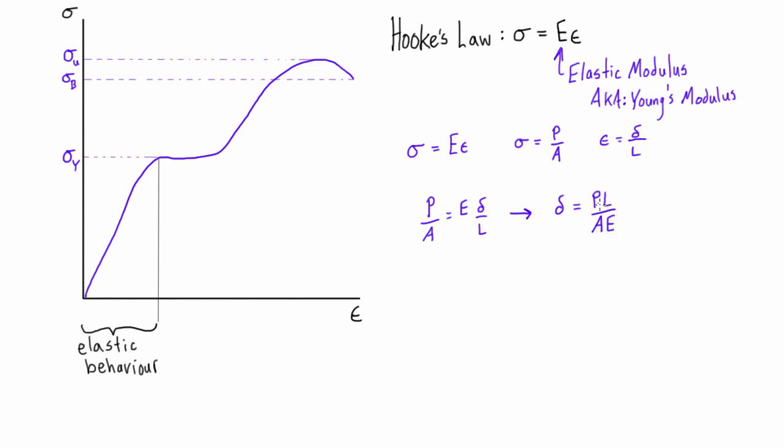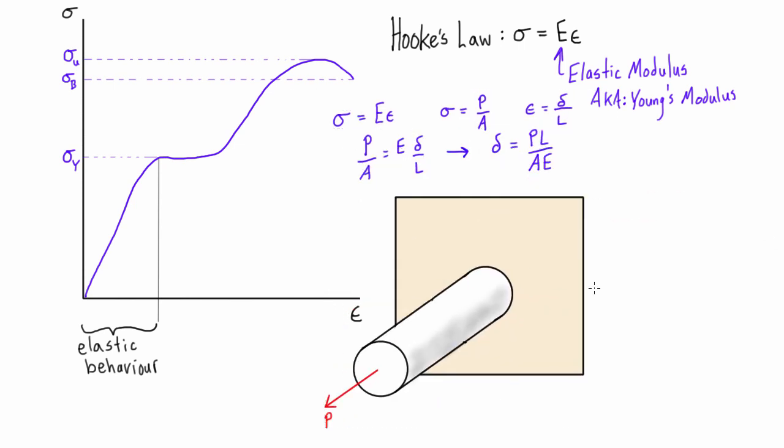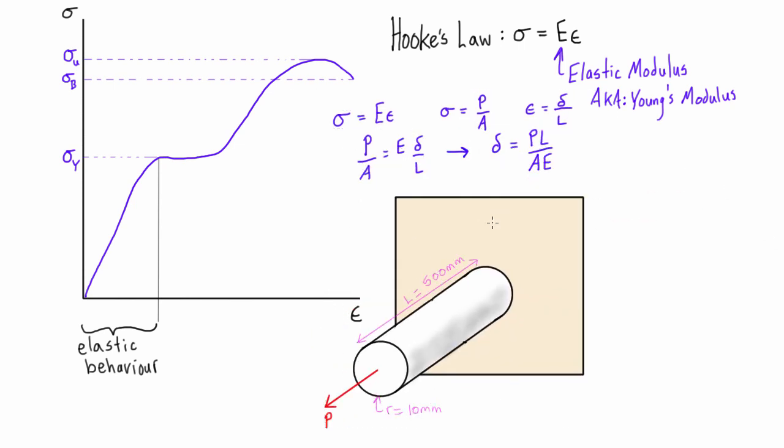And we can now determine the deformation in a member that's subjected to axial loads if we just know a little bit of information about it. So let's solve this example. We need to first calculate the cross-sectional area of this member. So A equals pi r squared, which is pi times 10 millimeters squared. And that equals 314.16 millimeters squared.